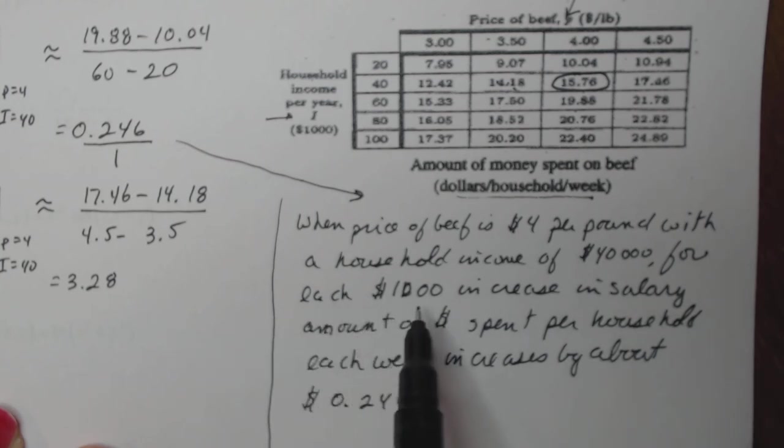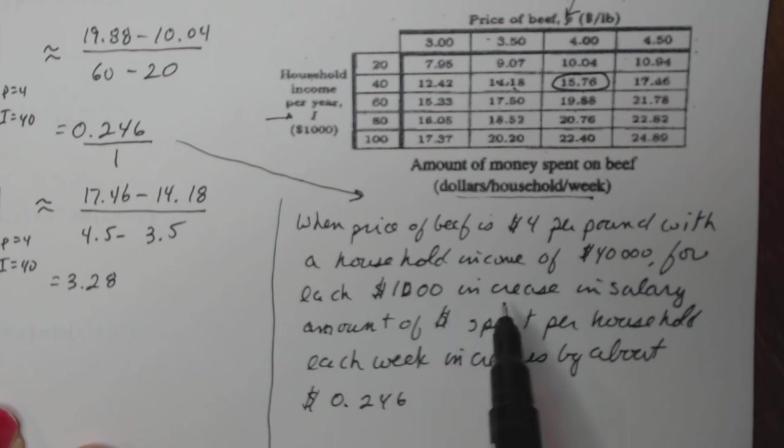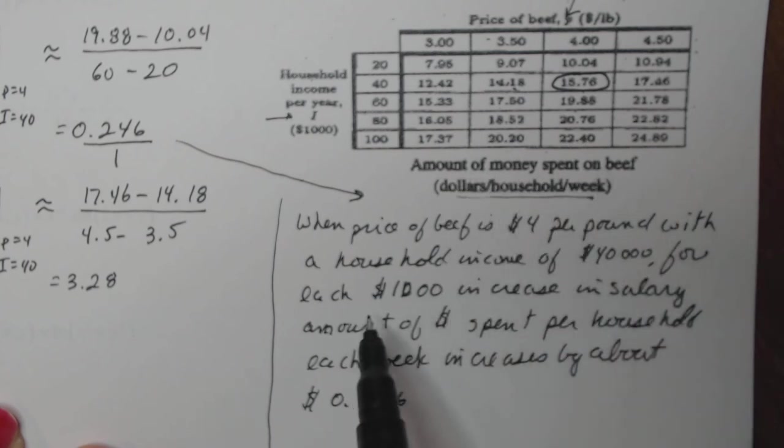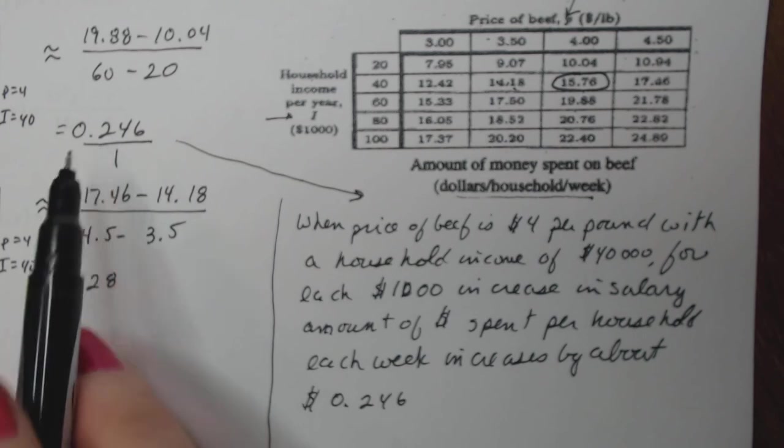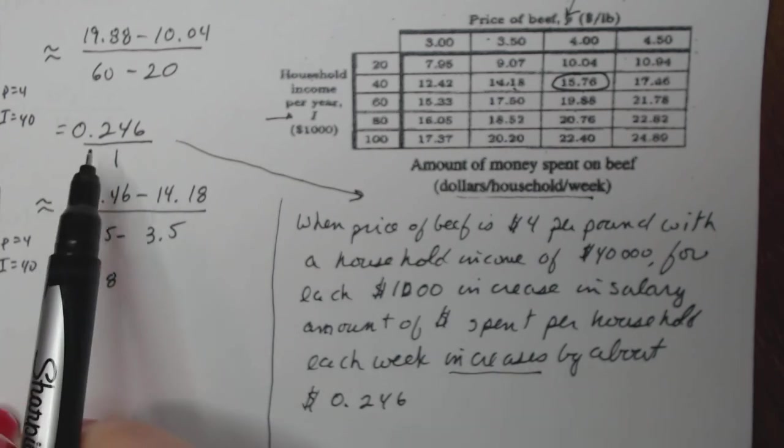So I say, alright, I'm going to change my independent variable a thousand dollars. So that's a thousand dollars increase in salary. Then the amount of money that I spend on beef, the amount of dollars spent per household each week increases by about 0.246. Why does it increase? Because that's a positive number.